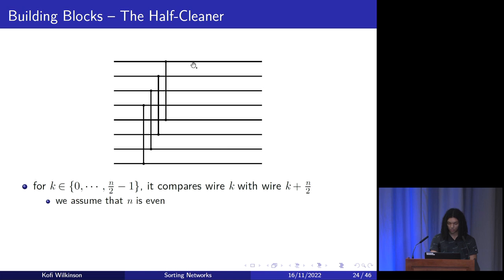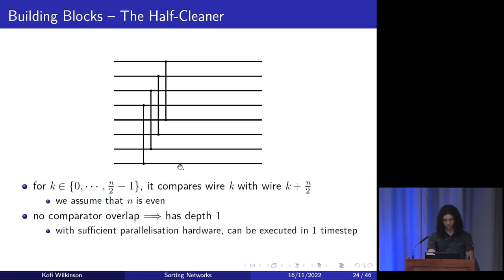Here is a sub-network called the half-cleaner. It is defined with k ranging from 0 to n/2 − 1, inclusive, and it compares wire k with wire k + n/2. We assume n is even for simplicity. Essentially this network compares a value in the bottom half of the input with a corresponding value in the top half. Since it has no overlapping comparators, it has depth 1 — so with sufficient parallelization hardware, all its comparisons can be done in one time step.